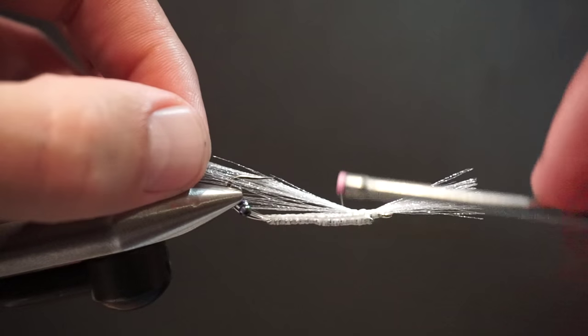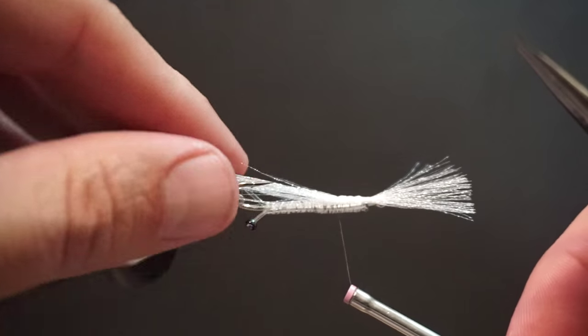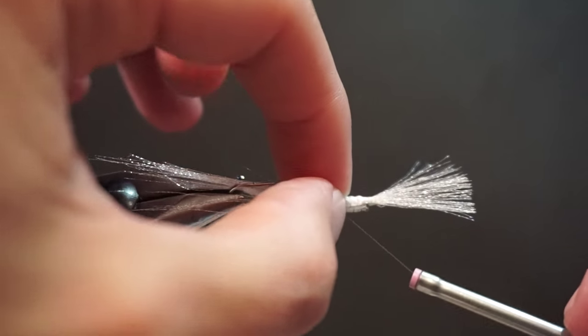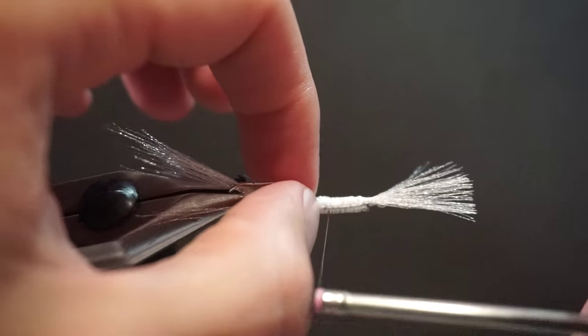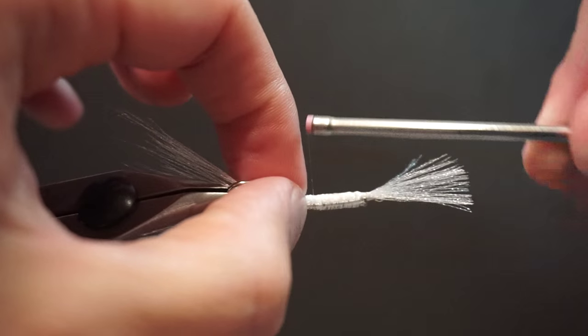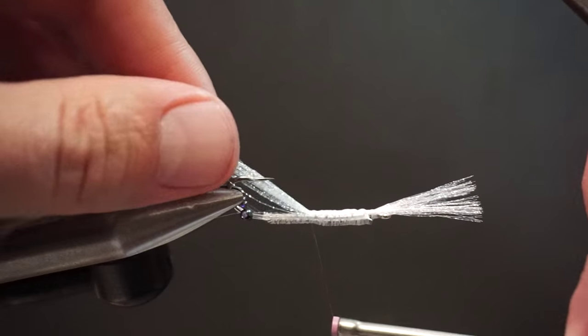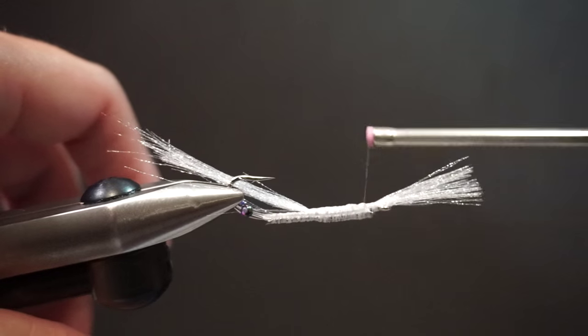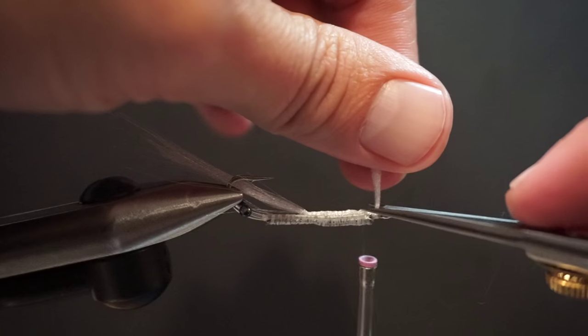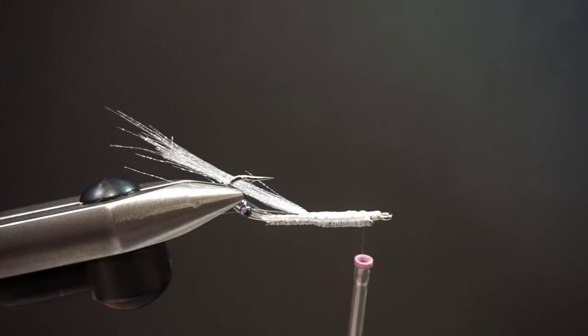I'm just going to tie this down along the top of the hook shank, about two thirds of the way down. Trim that down.